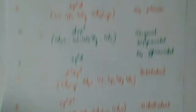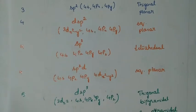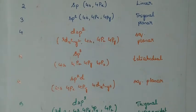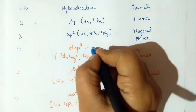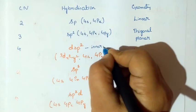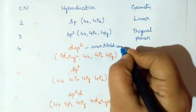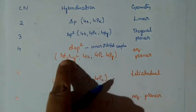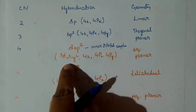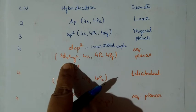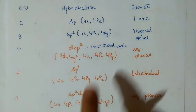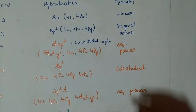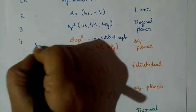This summarizes the hybridization and geometry with coordination number. Now discussing from coordination number 4: if D appears first — meaning 3D orbitals are involved — these are called inner orbital complexes, because 3D is involved. Inner orbital complexes form when the ligand is a strong field ligand.